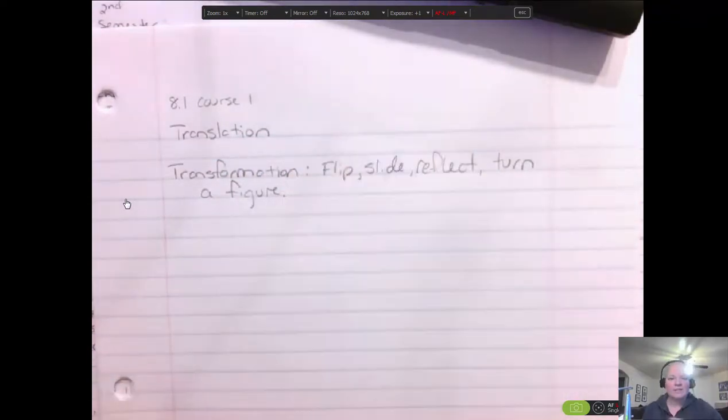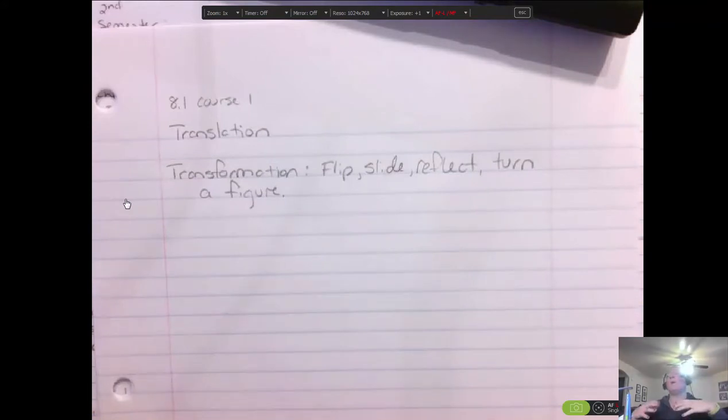So overall, a transformation is where I'm going to take a figure and flip it, slide it, glide it, move it all around, and we have special names for each of those types of moves. The basic idea of a transformation is you take something and you're moving it, or you're reflecting it, or taking the scale and changing the scale of it as well.